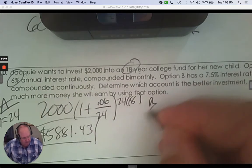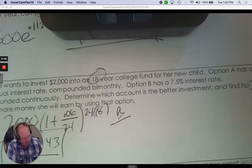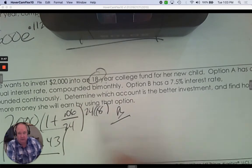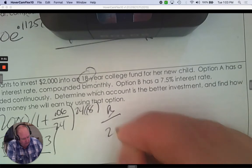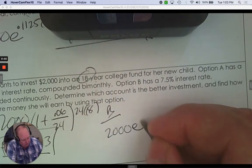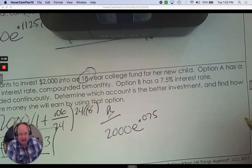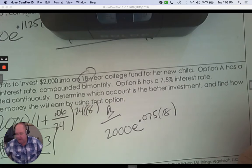Option B has 7.5% interest rate, compounded continuously. So now we start with $2,000. But now we're going to use E. And the interest rate as a decimal is 0.075. And again, 18 years. So it's 2,000 E to that.